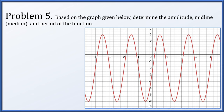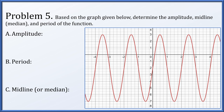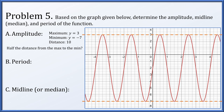For problem 5, we're given a graph and we need to determine the amplitude, midline, and period of the function. The maximum value is 3 and the minimum value is -7. The distance between these two is 10. Half the distance from the max to the min is 5, and that's our amplitude.